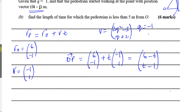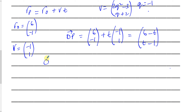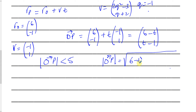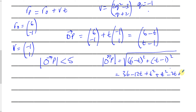Now we take this position vector and find its magnitude. We want the times for which |OP| is less than 5 meters. The magnitude of OP is the square root of (6 - t)² + (t - 1)², which expands to 36 - 12t + t² + t² - 2t + 1. Simplifying under the square root gives 2t² - 14t + 37.